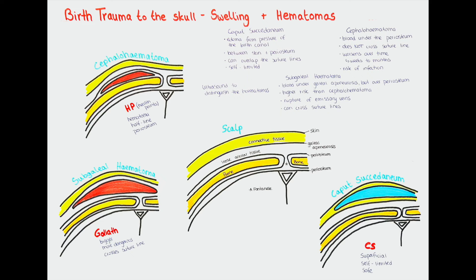The next one is cephalohematoma. Here, think HP — like health points from video games. H is for hematoma, meaning it's a collection of blood. Also H for half line, since it does not cross the sagittal suture and remains on its side — so it stays on the half line. P is for periosteum, since the collection of blood is under the periosteum rather than above. So: a collection of blood under the periosteum that does not cross the suture. For cephalohematoma, just remember H and P.